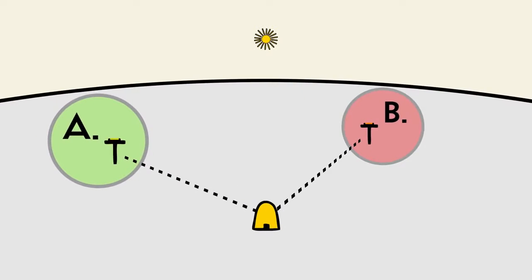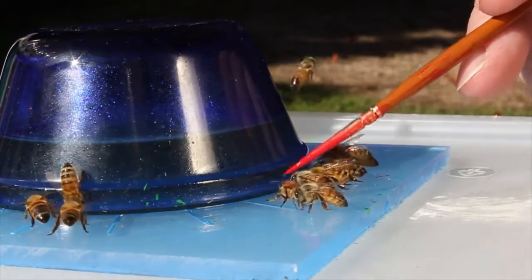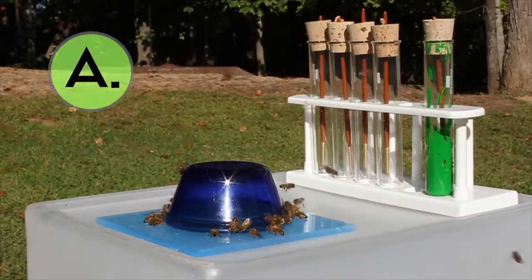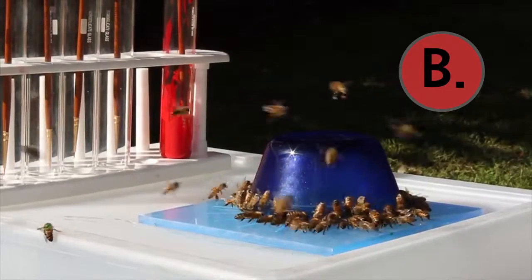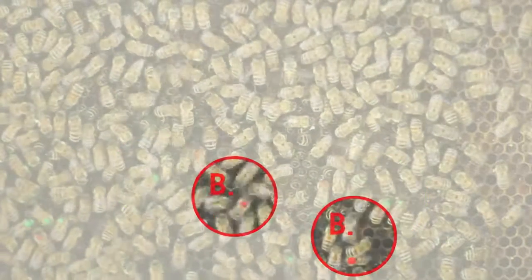At each location, visiting honeybees are marked with a small spot of paint. A separate colour of paint is used at each station. So when a bee returns to the hive, it can easily be determined which feeding site it visited.